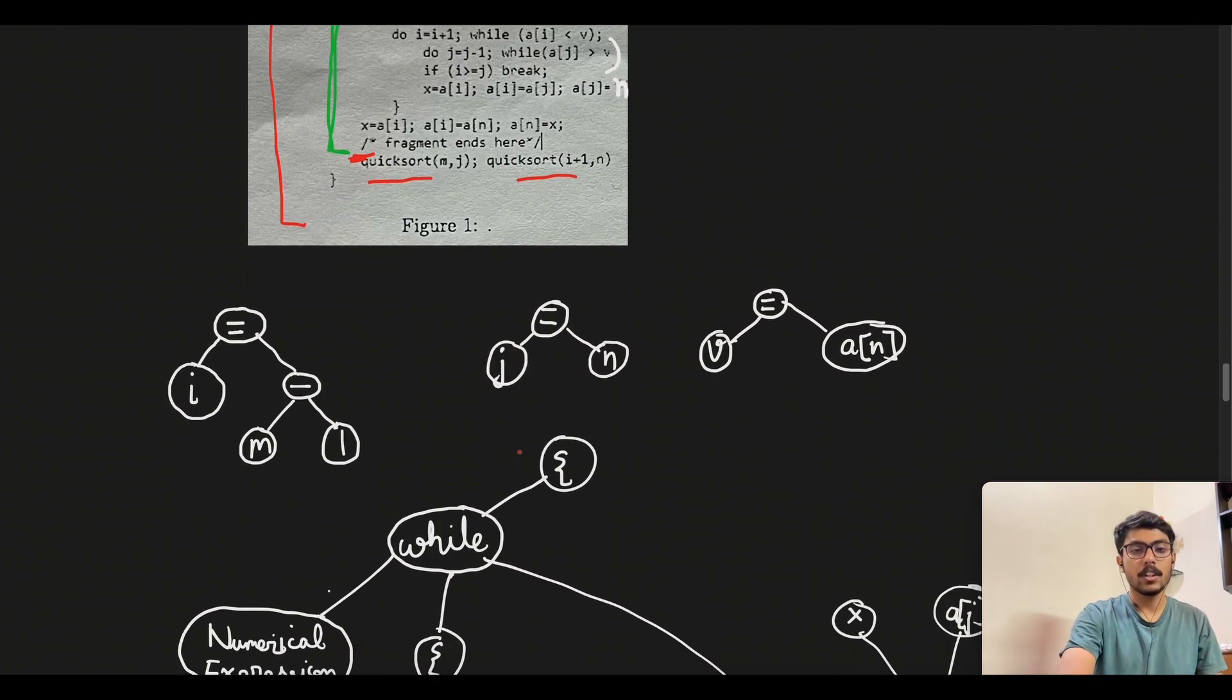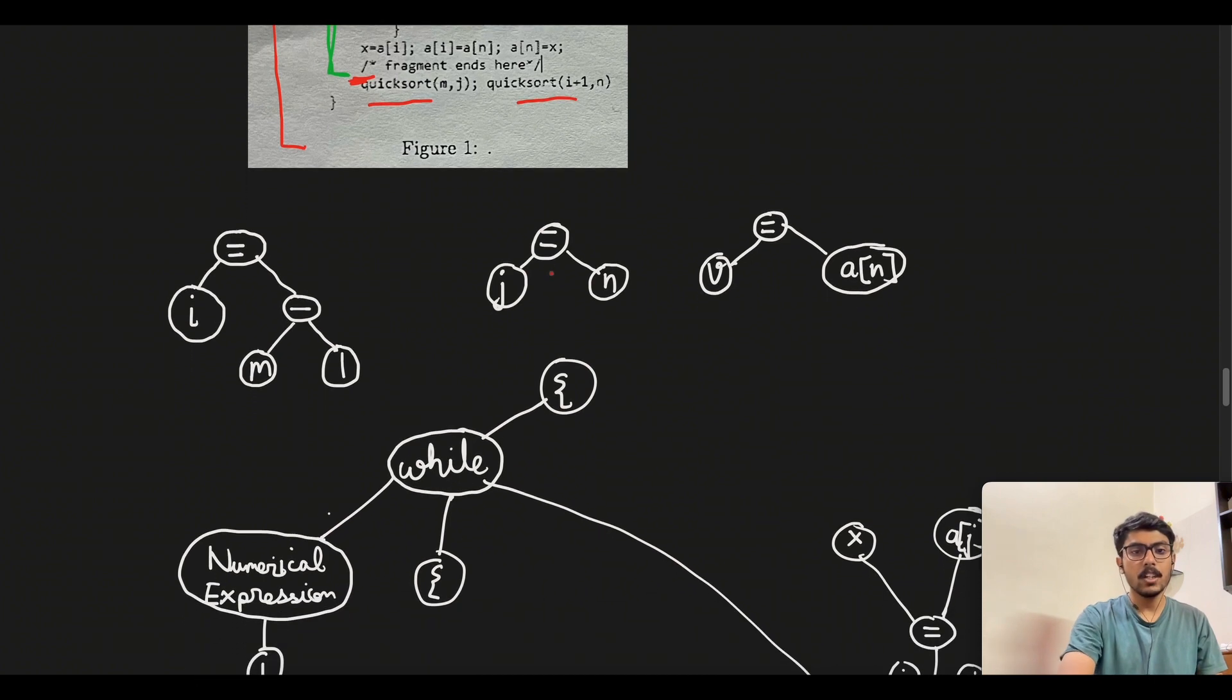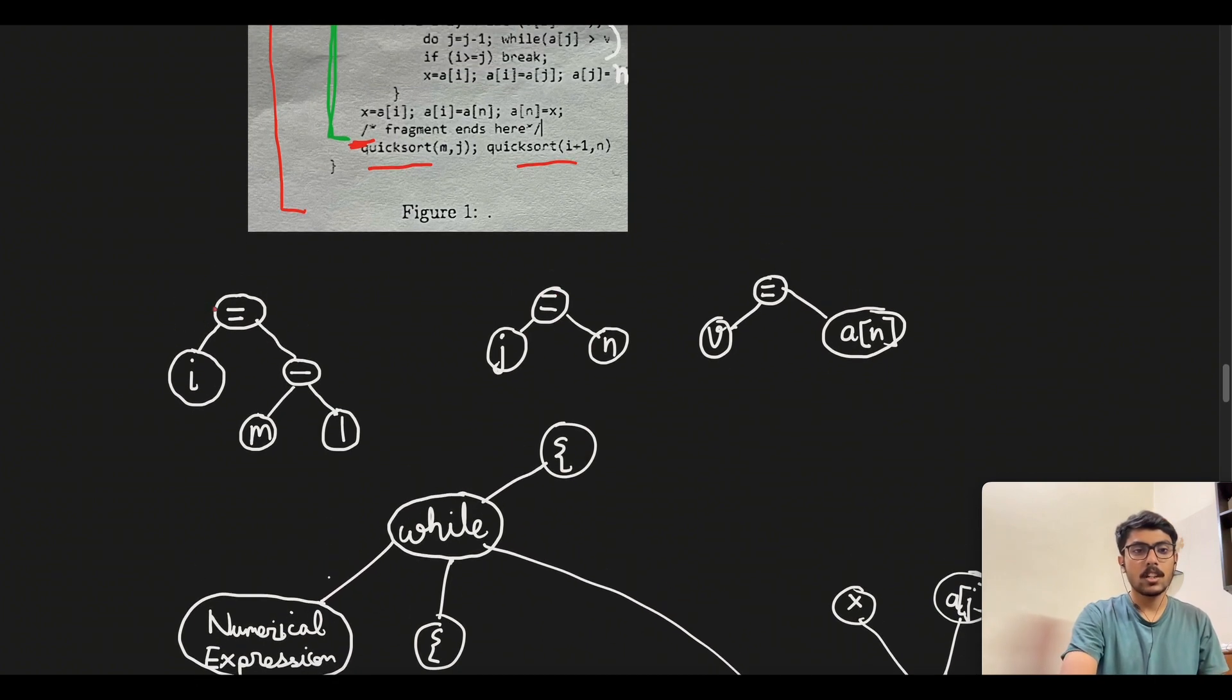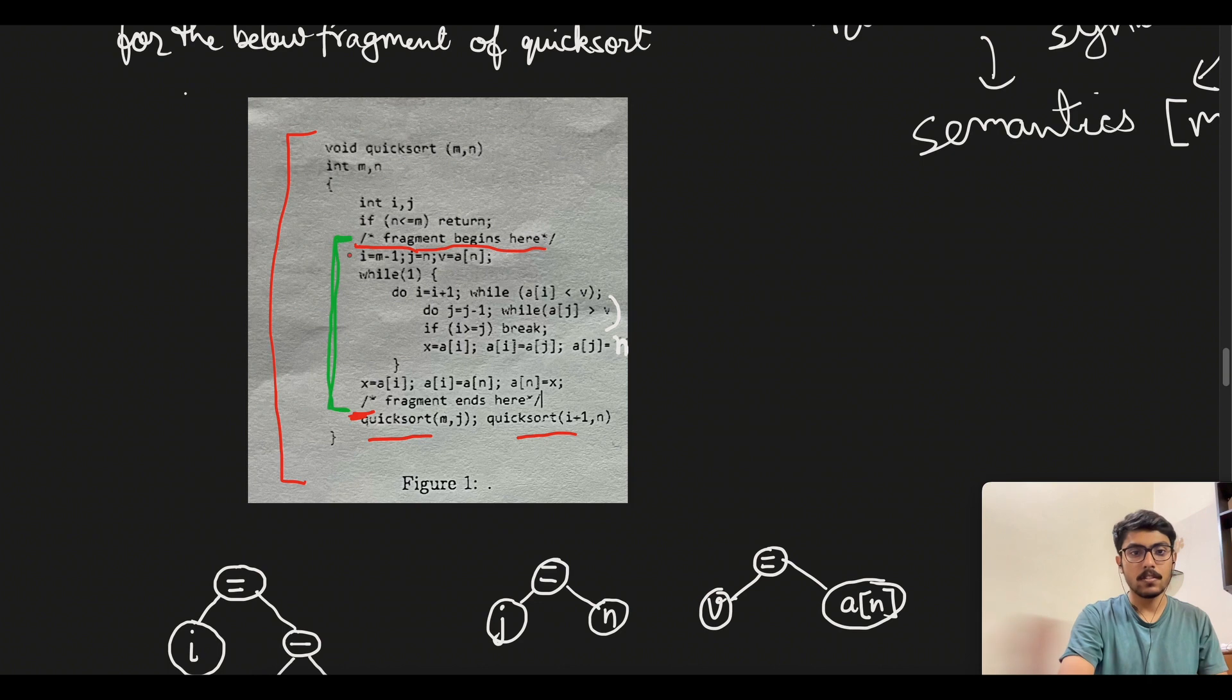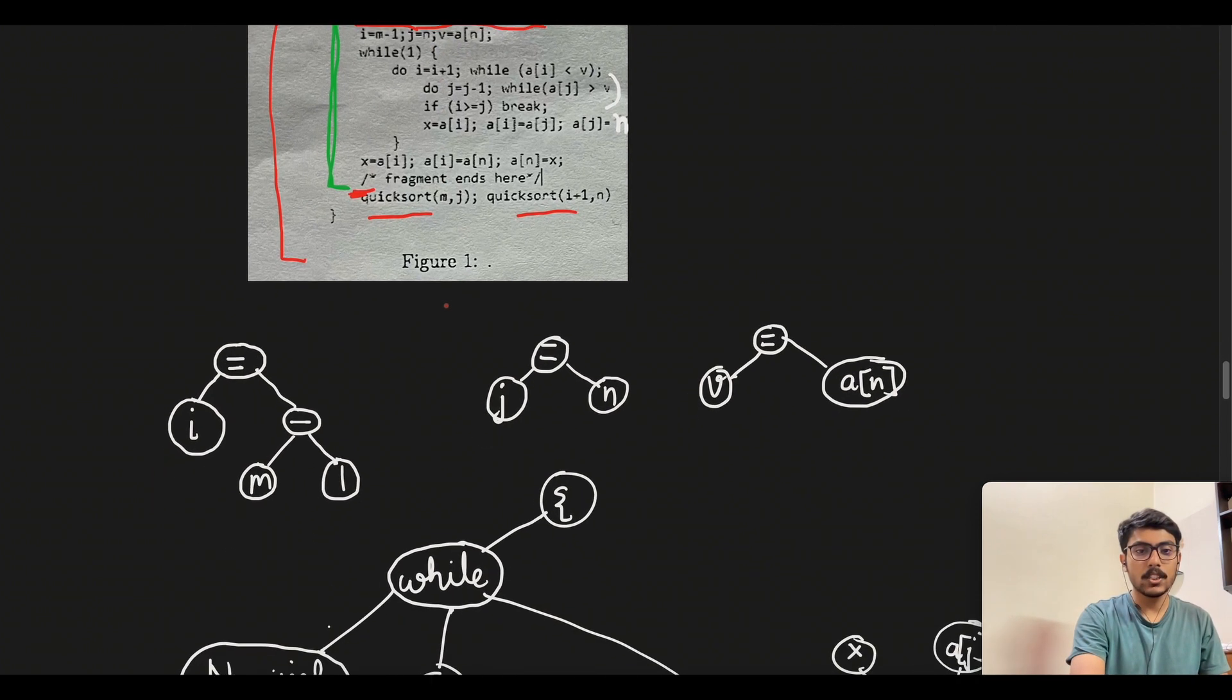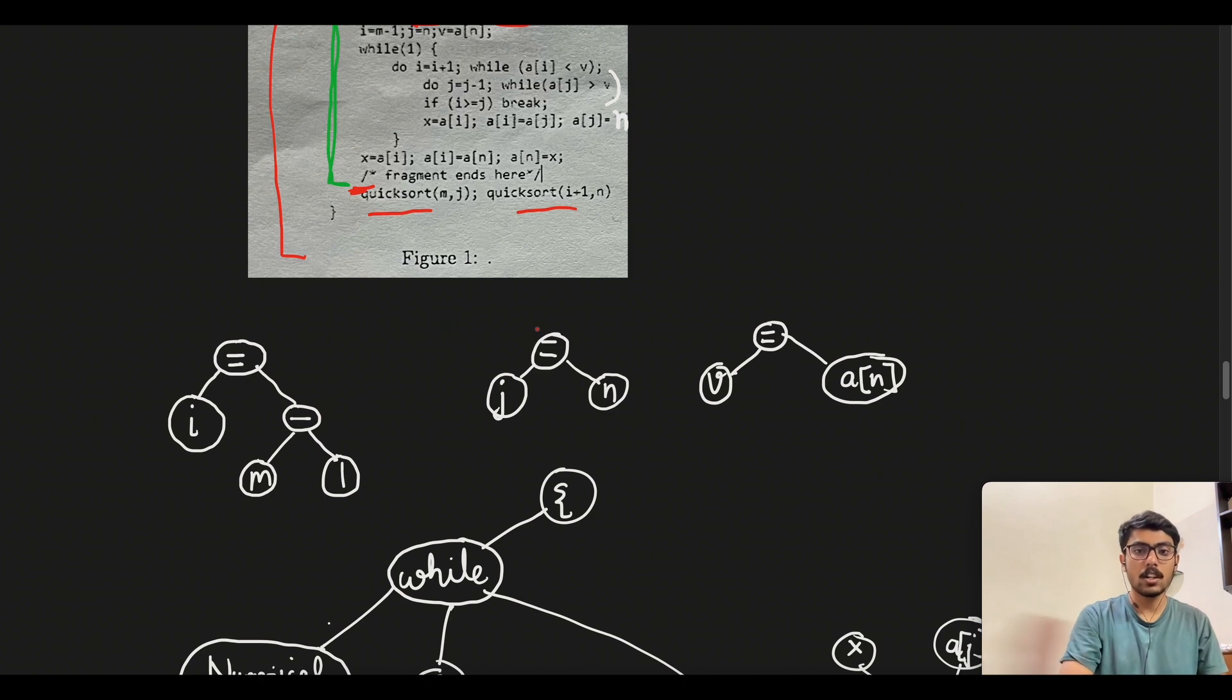If we look into what we need to draw, the first thing is these statements: i is equal to m minus 1, j is equal to n, v is equal to a of n. All these we can denote using the assignment operator.